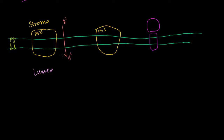The first question is: why is this called photosystem II while this is called photosystem I, when we're starting over here? The reason is this was discovered first, even though in the light reaction it actually comes into play second. This was discovered first — that's why they call it photosystem I. But the reality is photosystem II is where everything starts from.